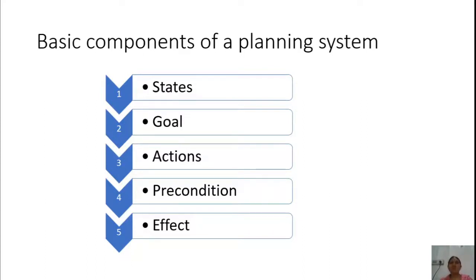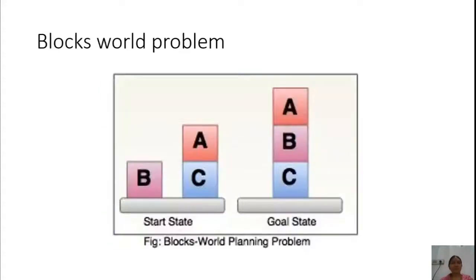So these are the five basic components of a planning system: states, a goal, actions, preconditions, and effects. For every action you need to list what preconditions should be satisfied to perform it, and what the effect is going to be. Before going into specific planning techniques, there are different planning methods we'll see later: one is called goal stack planning, second is nonlinear planning, and we also have constraint planning. But first, let us look into the blocks world problem.